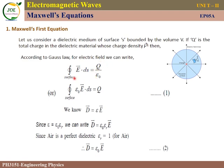This is the Gauss law for the electric field. In the mathematical form, we replace epsilon naught on the left side. The division becomes multiplication, so the surface integral of epsilon naught E vector dot dS equals Q. This is equation number 1.